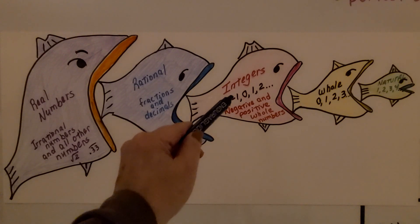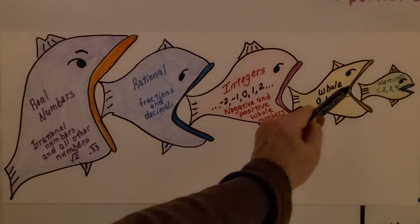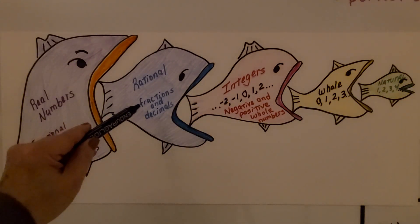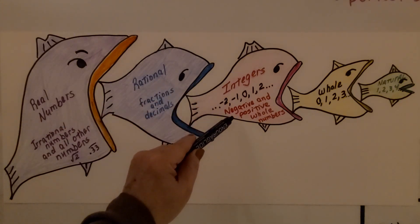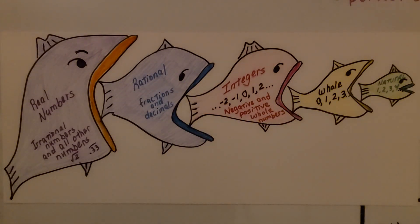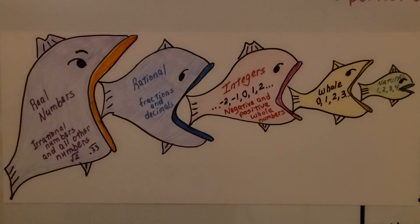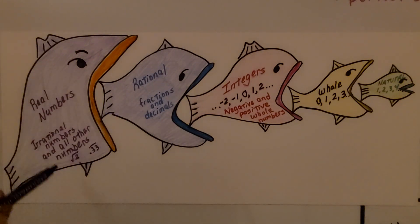Then integers are negative and positive whole numbers, so they include the whole numbers, the natural numbers, and negative numbers. Rational numbers include fractions and decimals, the negative and positive whole numbers, the whole numbers, and the natural numbers. Real numbers have irrational numbers included along with rational numbers.